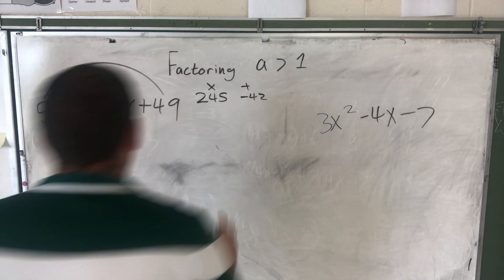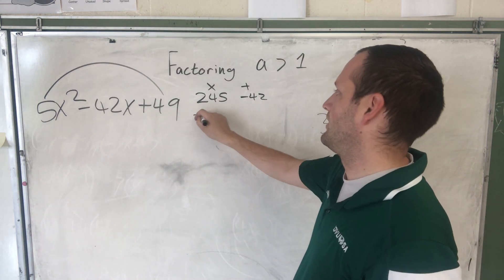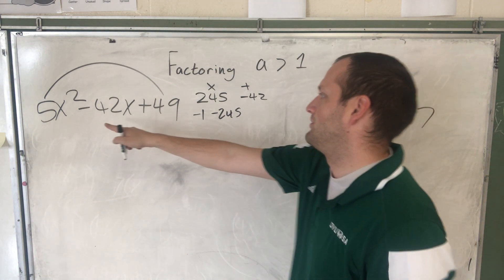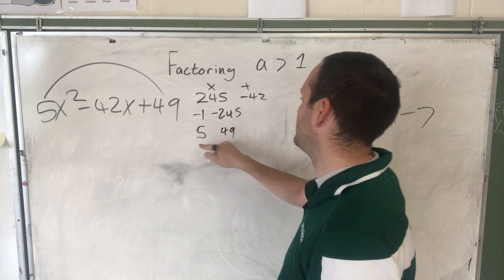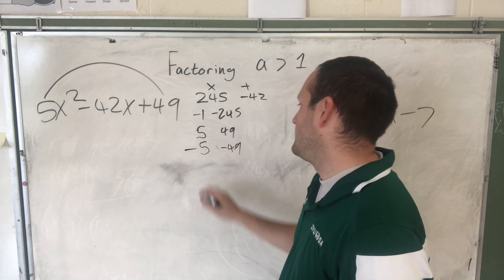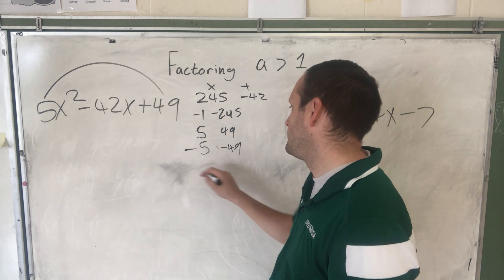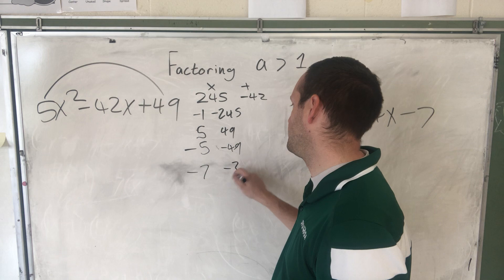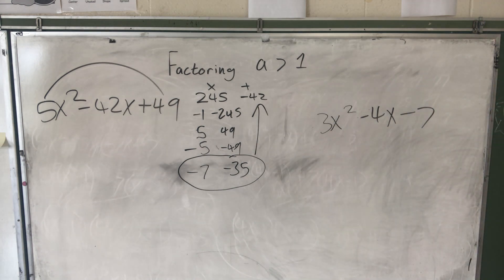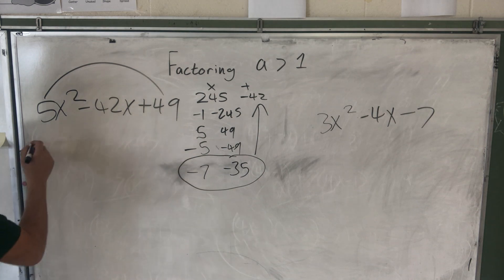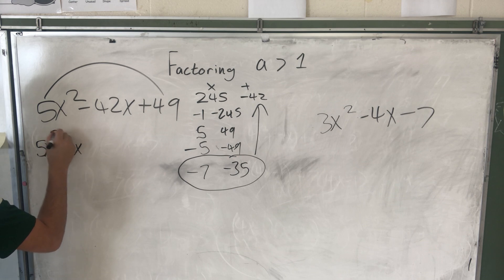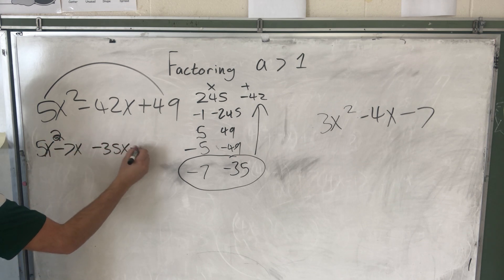Let's look for factor pairs. We could try negative 1 and negative 245. We know 5 and 49 are factors, so maybe negative 5 and negative 49. Since 49 is 7 squared, let's try negative 7 and negative 35. What do those add up to? Negative 42! We found our numbers. So we split: 5x² minus 7x minus 35x plus 49.